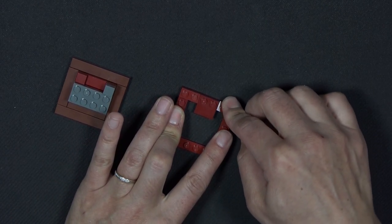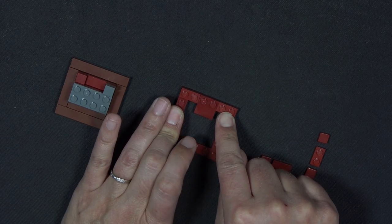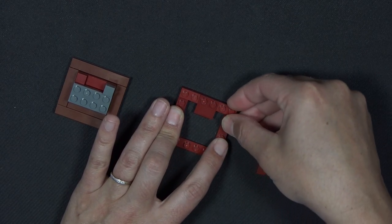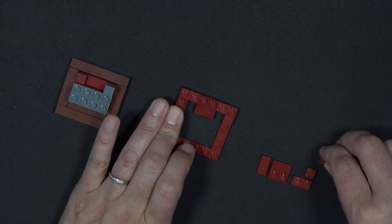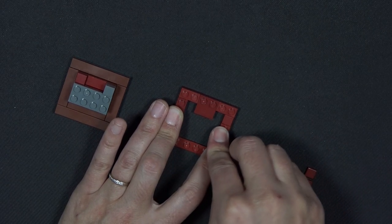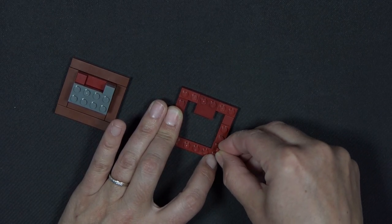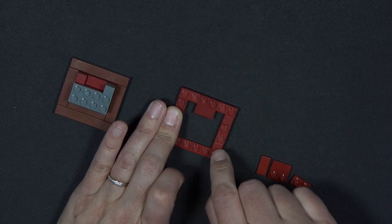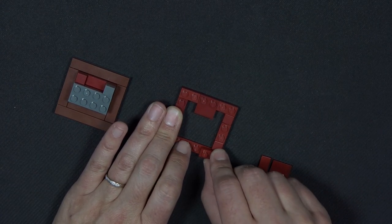And then connecting this part with another 1x2 plate, a 1x1 tile here, a 1x2 plate here, another 1x1 tile, and a 1x2 plate.